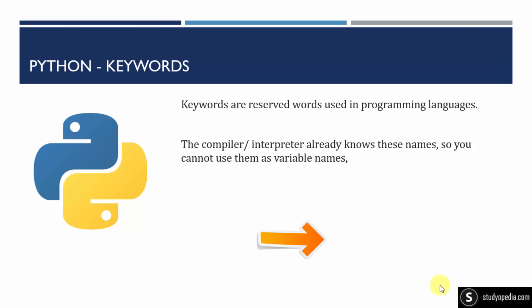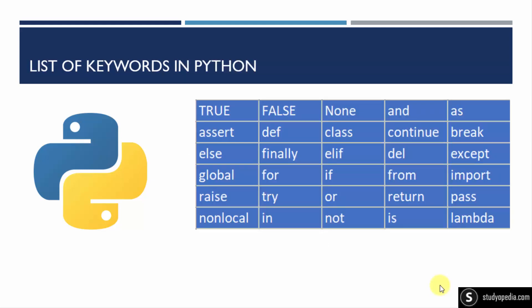You cannot use these keywords as variable names because they are reserved words. All these are keywords — reserved words — and we cannot use them as variables. I can create variable names like var, val, a, b, i, j, k, x, y, but I cannot use for, if, from, break, import, or global as variable names because these are reserved keywords.